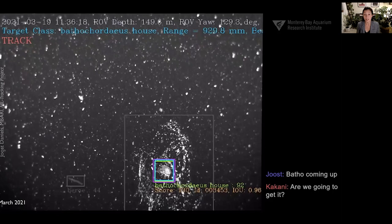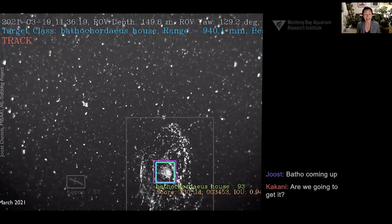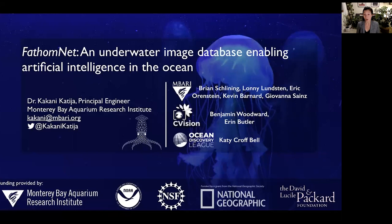Algorithms like these can revolutionize how we deploy vehicles to explore the deep sea, discover life, and valuable resources in our ocean, and minimize impact during sampling. And as the FathomNet ecosystem grows through contributions from the community, it could help unleash artificial intelligence to help us explore and discover our ocean. Thank you for your attention, and thank you to our funders for making this work possible.